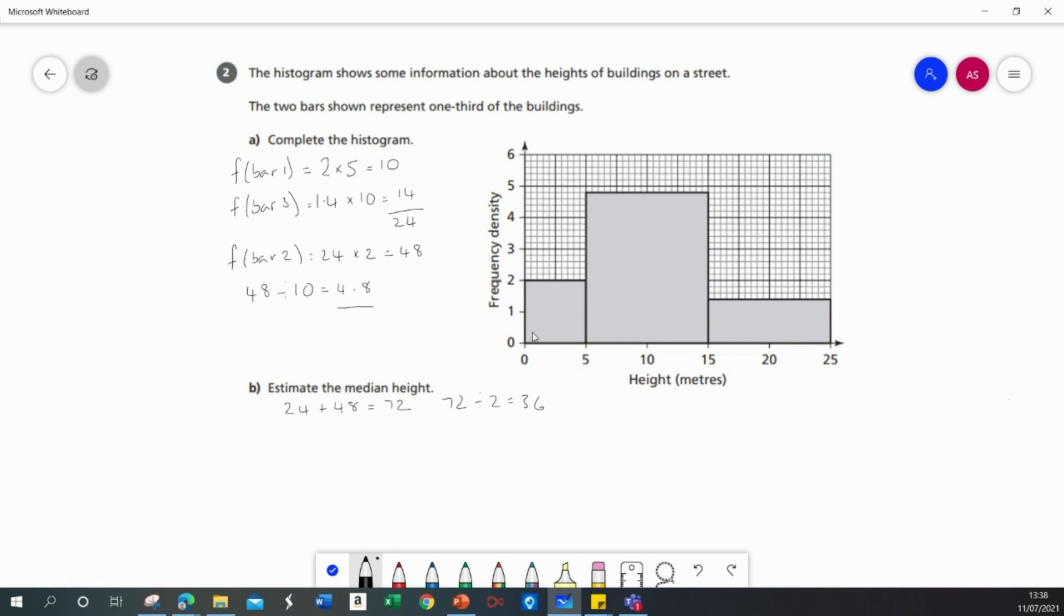Now the frequency of the first bar I know is 10 and the second bar is 48. So if I subtract 10 from 36, I need to work my way across 26 over 48 of that height altogether.